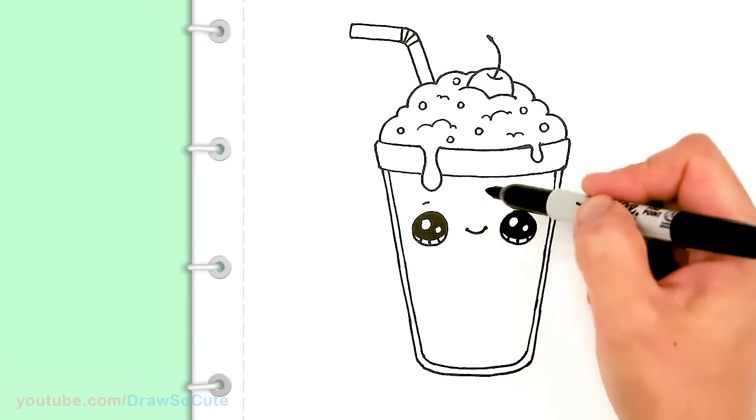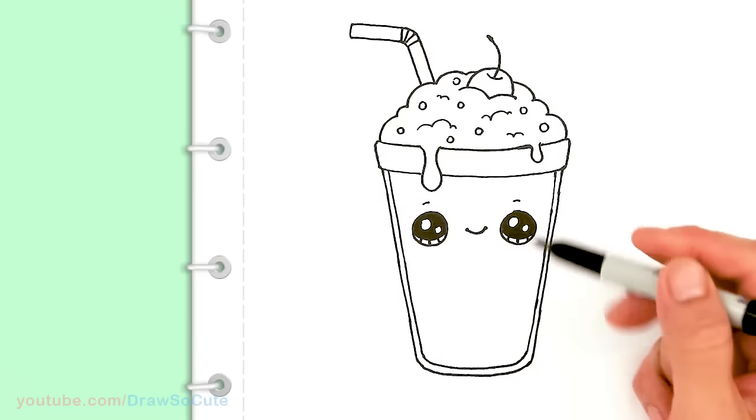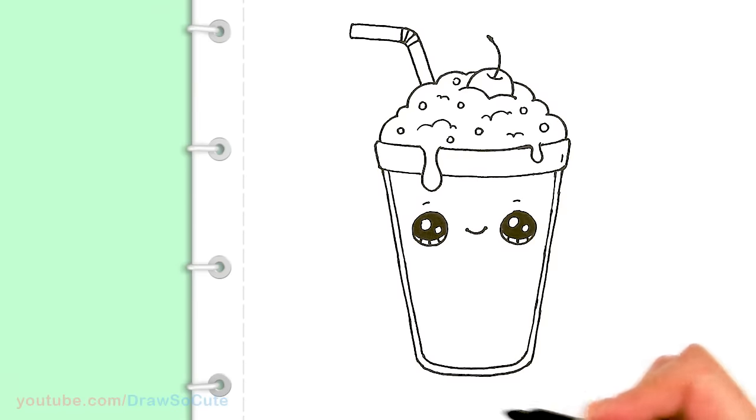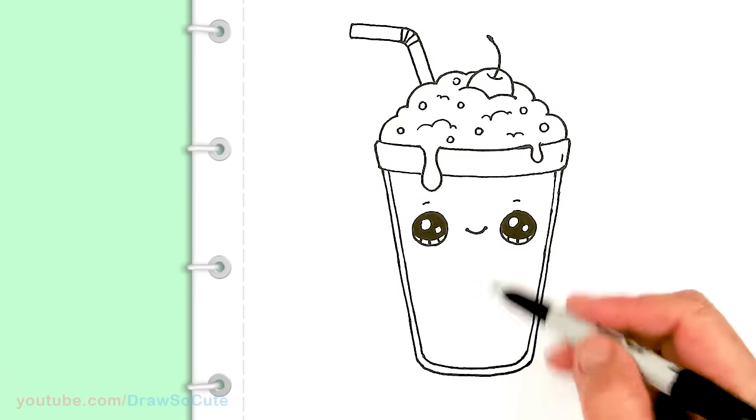And if you want you can add cheeks when you're coloring it. And add some darker panels towards the back to give our glass some grooves. It's all up to you. Or you can just leave it as is and just color it. And whatever flavor milkshake you love.